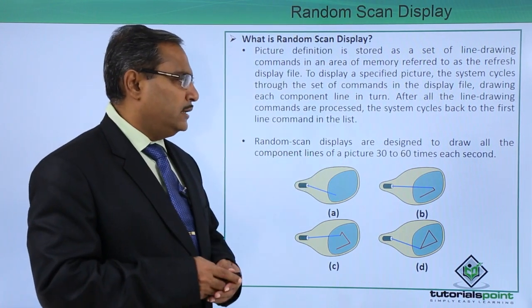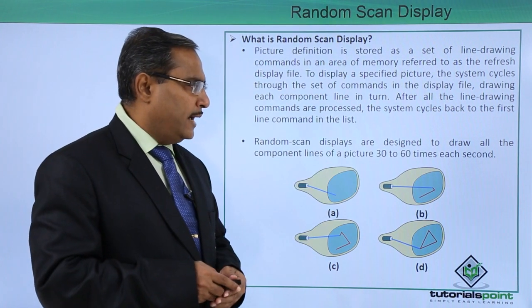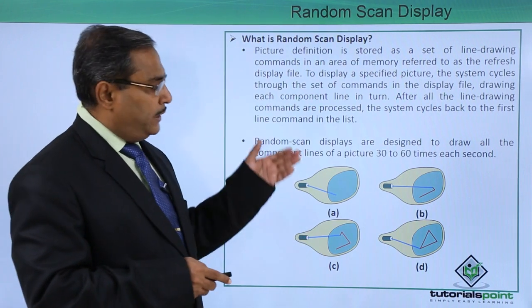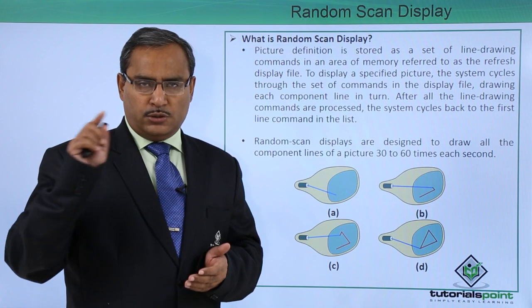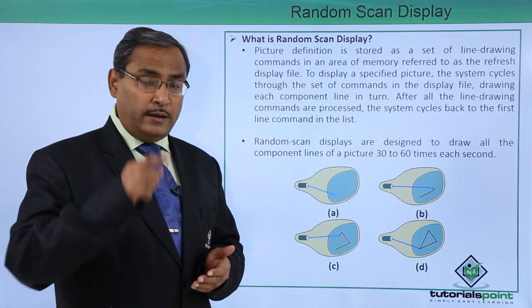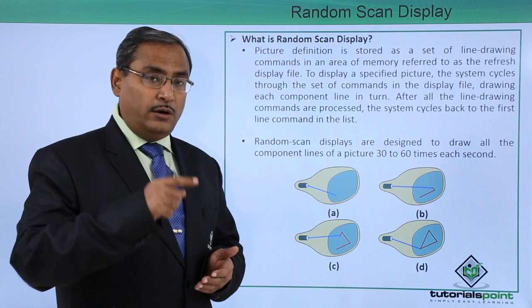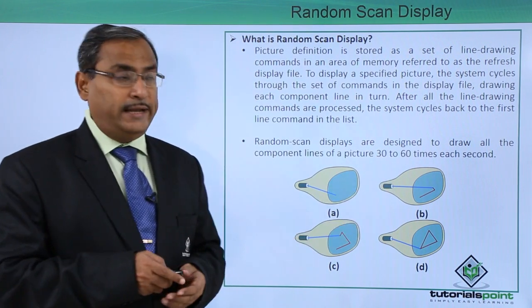Random scan displays are designed to draw all component lines of a picture 30 to 60 times each second. In this way we are having a set of commands and those commands will be executed. The picture will be drawn once and then it will go on repeating executing those commands, and it will be done 30 to 60 times for each second.